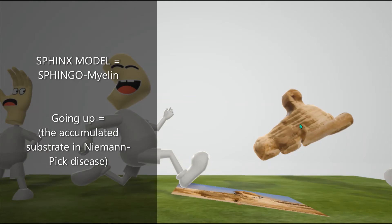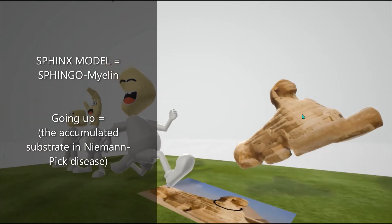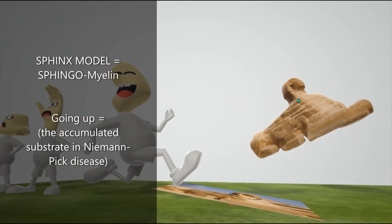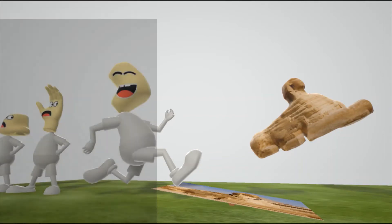As we can see, when he stepped on this board, it forced this Sphinx model to go flying up. This Sphinx model helps us remember Sphingomyelin. Sphingomyelin is the accumulated substrate in Niemann-Pick Disease. The accumulation of Sphingomyelin is what leads to all the symptoms in Niemann-Pick Disease. Let's check that out.